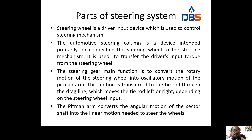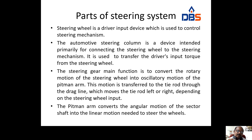The steering wheel is a driver input device — it is easy to control the entire steering mechanism. The entire steering mechanism is controlled by the steering wheel, which is the input of the steering mechanism. The steering column is a device connecting the steering wheel to the steering mechanism. Inside the steering column, there is a steering shaft connected to the steering wheel. Once you rotate the steering wheel, the steering shaft will be rotated, and the other side of the steering shaft is connected to the steering gearbox.